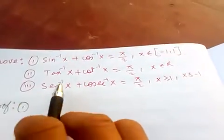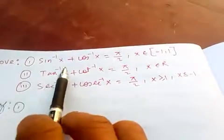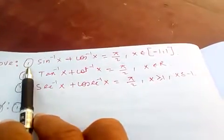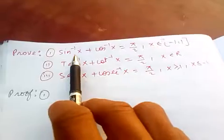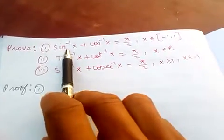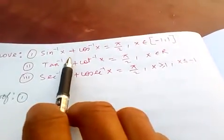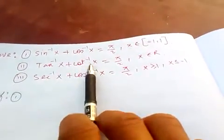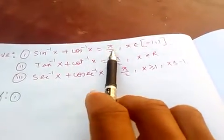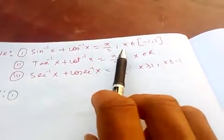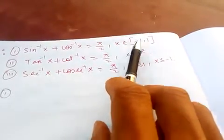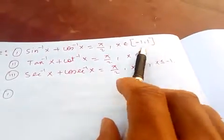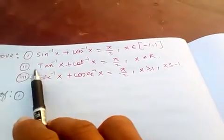Hello friends, today let's discuss inverse trigonometry identities. Number 1 is: sin inverse of x plus cos inverse of x equals pi by 2, and x belongs to minus 1 and 1, including both endpoints.